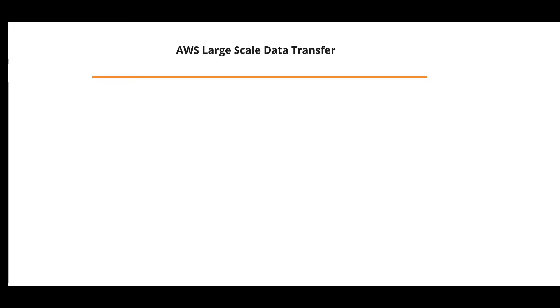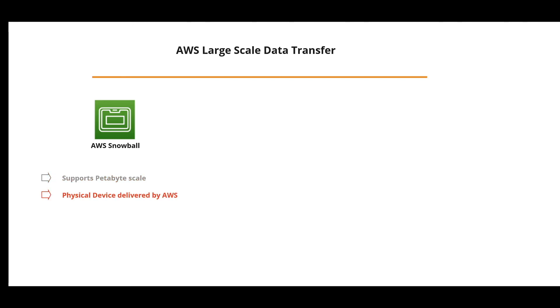Next, let's look at AWS large-scale data transfer services. The first is AWS Snowball, a service to physically migrate petabyte-scale data to AWS. AWS delivers a physical device to your location; you connect it to your network and upload data from within your network. When done, you return it via a local carrier to AWS, which then loads your data to S3.